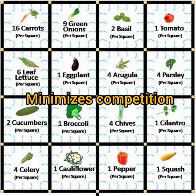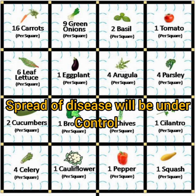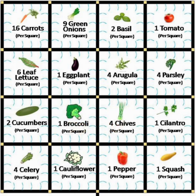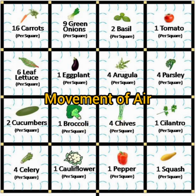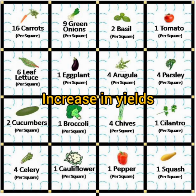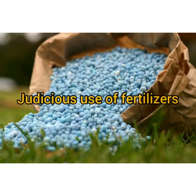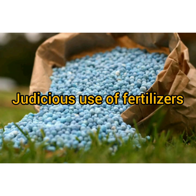Proper spacing minimizes competition between plants, keeps the spread of diseases under control, and reduces migration of pests from one plant to another. There will also be better air movement between plants, which helps in reducing diseases and increasing yields.